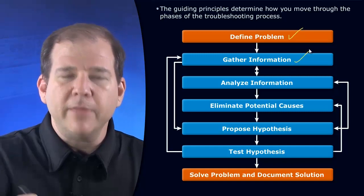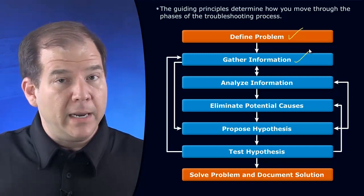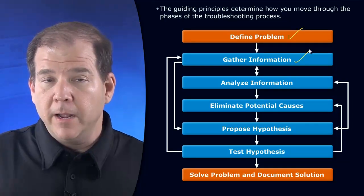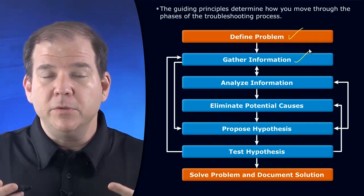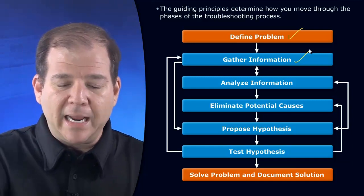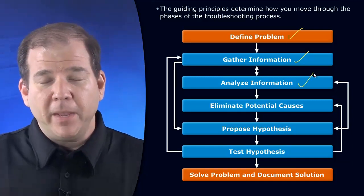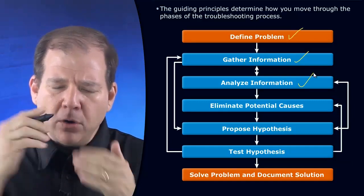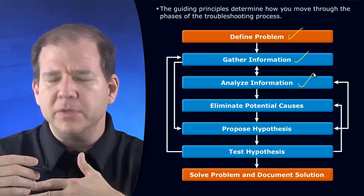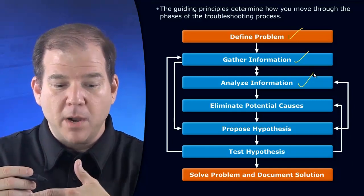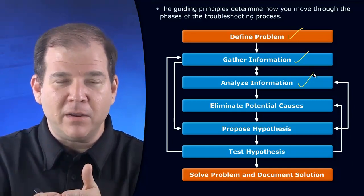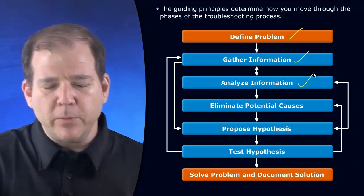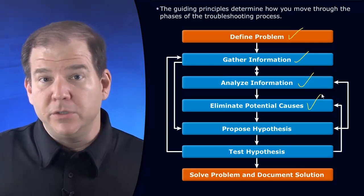Then we start to gather information around the problem. This could be from show command output, debug, looking at a syslog server, or talking to the person who experienced the problem. We start to analyze all this information that we collect and start to decide — well, if the problem is happening all the time, it's probably not an access control list that's blocking traffic, unless it's a time-based access list. We start to push aside and eliminate things that just do not make sense.